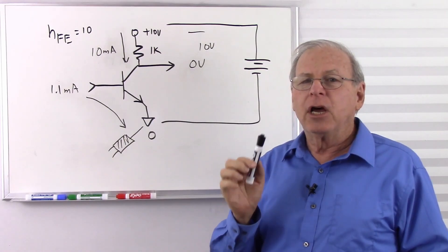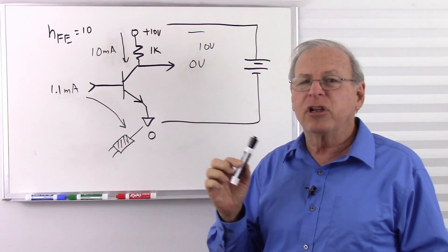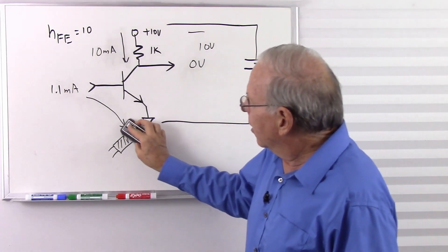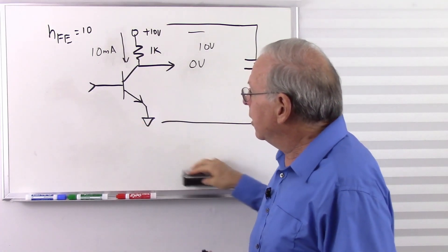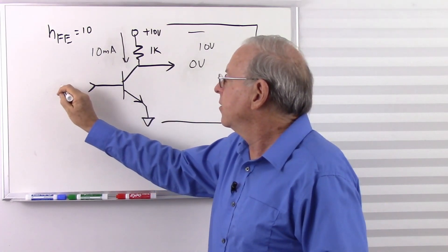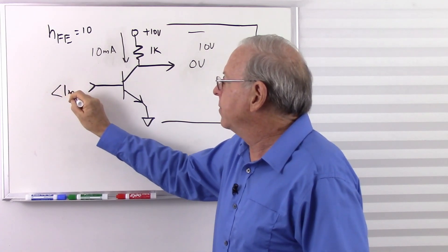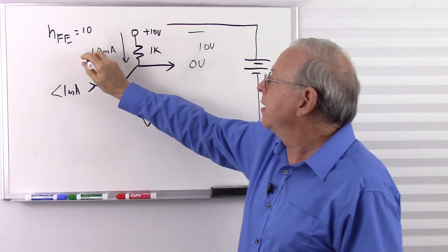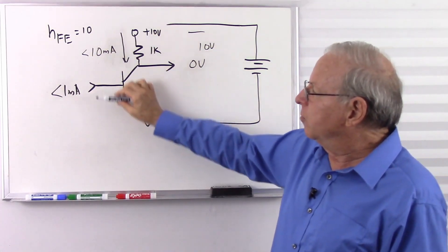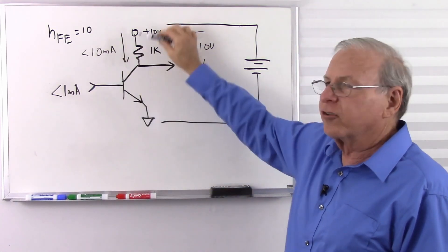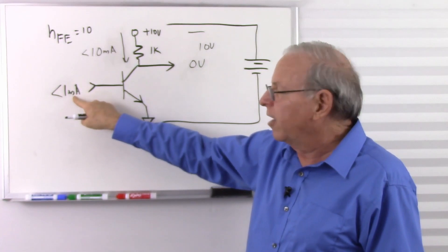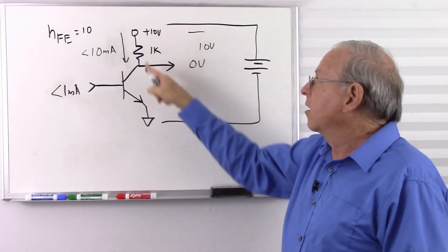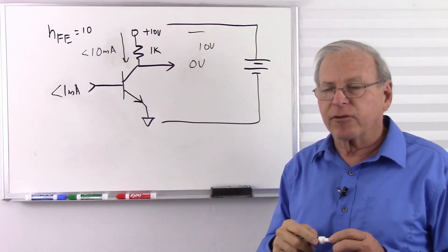Increasing the input at this point no longer changes the circuit — and that is the definition of saturation in electronics. When increasing the input no longer causes a change in the circuit, the circuit has reached saturation. So if the base current is less than 1 milliamp, the collector current will be less than 10 milliamps, and the circuit is not saturated. But as soon as I try to go above 1 milliamp, increasing that current will not cause a change — therefore we've reached saturation.